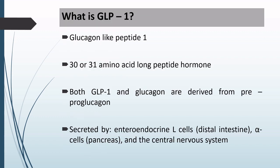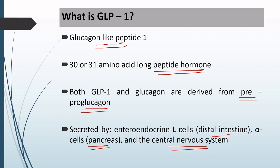To begin with, let us understand what we mean by GLP-1. GLP-1 means glucagon-like peptide 1. This GLP-1 is a 30 or 31 amino acid long peptide hormone. Both GLP-1 as well as glucagon are derived from pre-proglucagon. GLP-1 is secreted by the enteroendocrine L cells located in the distal intestine, the alpha cells of the pancreas, as well as by the central nervous system.